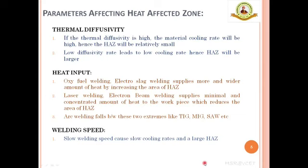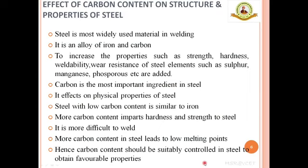The third factor is welding speed. Although optimum speed is needed to get a good weld, the welding speed should not be very slow, because slow welding speed produces a large heat affected zone. Therefore, optimum welding speed must be used in order to reduce the heat affected zone.